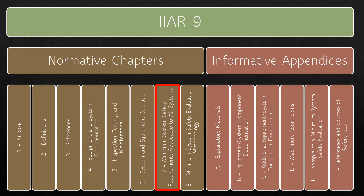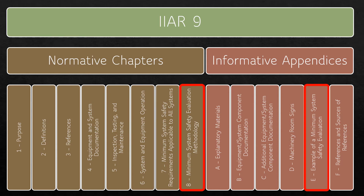Chapter 7 is titled Minimum System Safety Requirements Applicable to All Systems and contains most of the requirements for existing systems. The biggest implication of this standard is in Chapter 8, which requires systems to be evaluated against the minimum requirements of Chapter 7 within five years from the date of publication. Appendix E provides an evaluation template that can be used if desired.